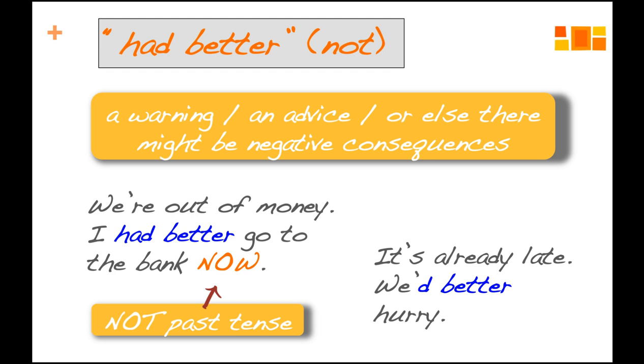And here is another sentence. It's already late, we'd better hurry. Because if we don't get home now, we're not going to get enough sleep and then maybe tomorrow we'll be tired, and that would be the negative consequence. So use it as a warning, use it when something is advisable, and use it when you'd like to express that if the person doesn't do what you suggest, there might be negative consequences.